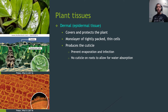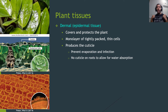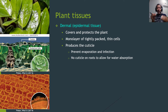The first tissue type, going from outside in, is dermal tissue — essentially like the plant's skin. This is the tissue on the outside facing the environment, and its job is to cover and protect the plant from evaporation, disease, and overheating. The sensitive tissues lie underneath it.